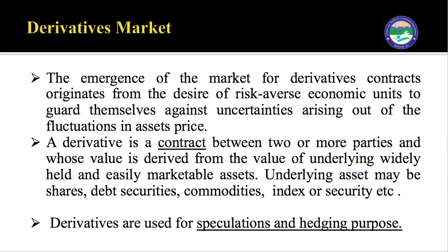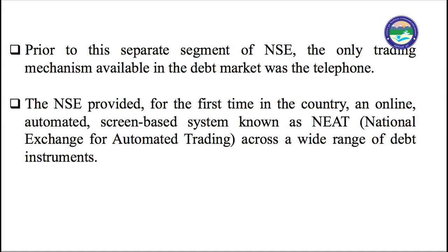Next we have the derivative market. The security market is very risky and volatile — share prices go up and down. There are risk-averse investors who don't want to take risks. To protect these investors, the derivative market came into existence. In the year 2000, the derivative market started officially operating. A derivative is a contract between two or more parties whose value is derived from the value of underlying widely held and easily marketable assets — like shares, debt securities, commodities, index, and securities. Derivatives are used for speculation and hedging purposes.